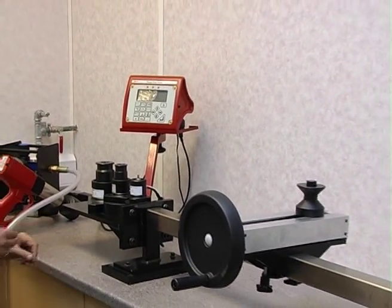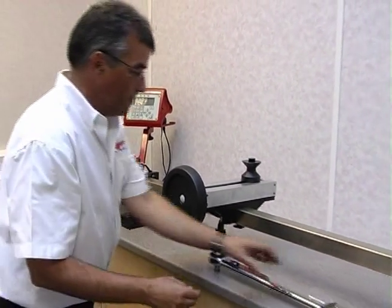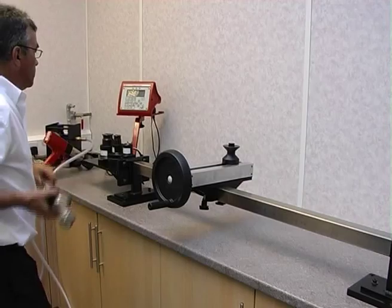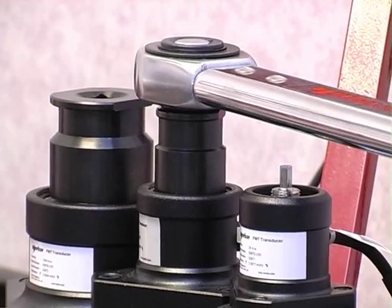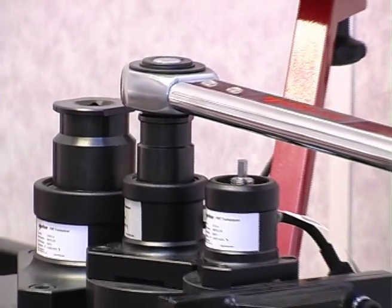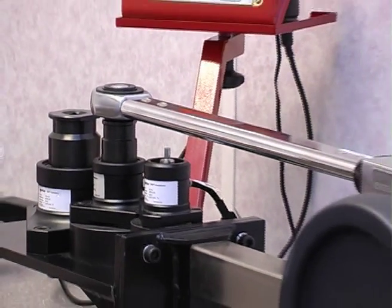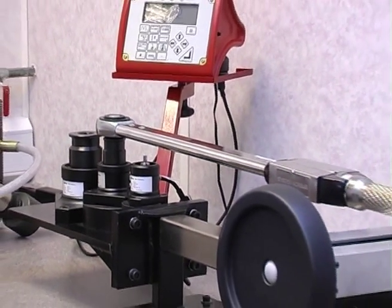The TWL-1500 is an accurate and cost effective loading rig for calibrating torque wrenches between 1 and 1500 Nm. Large torque wrenches can be operated effortlessly by simply winding the handle.